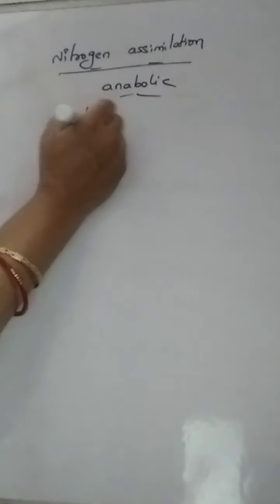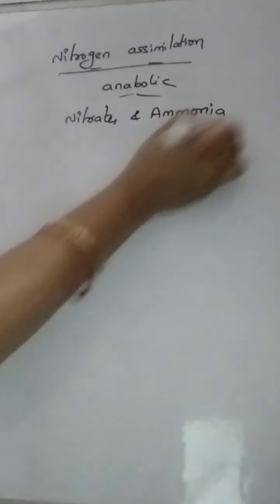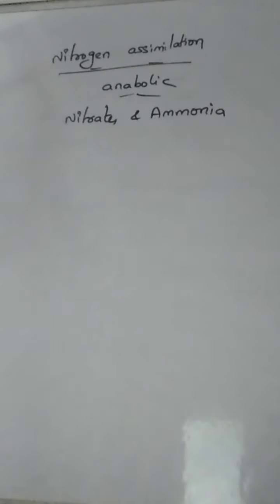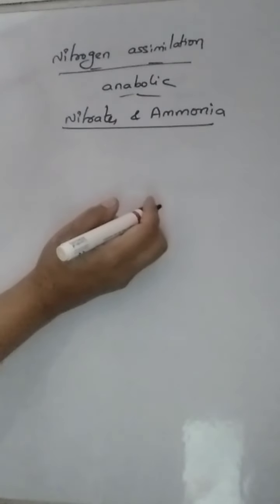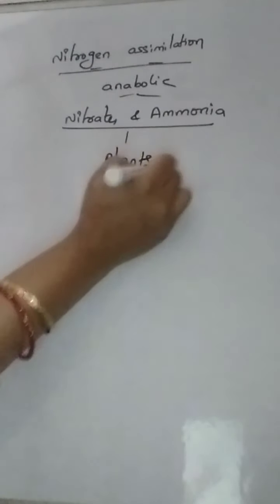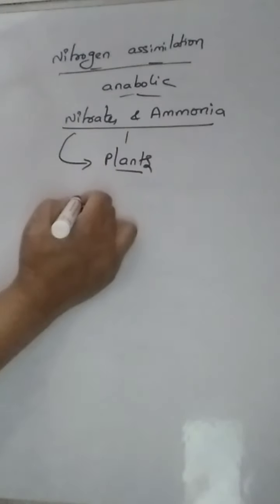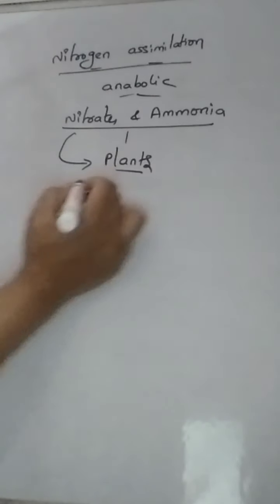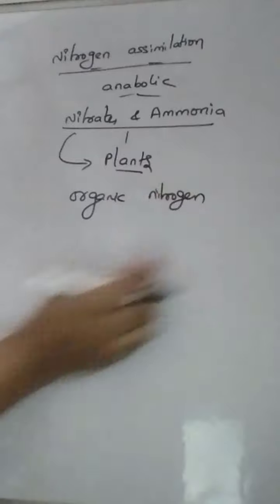In this step, what happens is that in biological nitrogen fixation, nitrates and ammonia are formed. These nitrates and ammonia, which are fixed by living organisms, are absorbed by the plants. The plants absorb the nitrates and the ammonia, and these will be utilized in the plants by producing organic nitrogen.